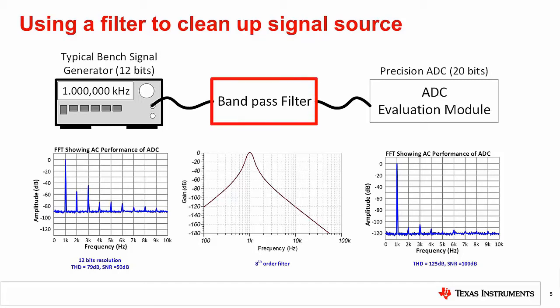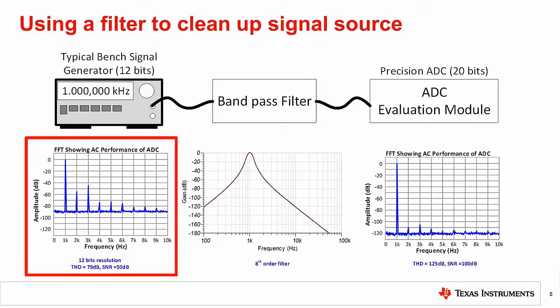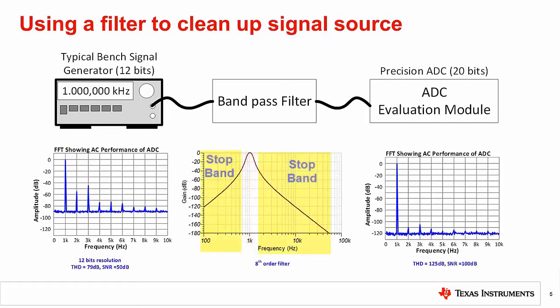One approach to getting high fidelity signals from a common signal generator is to use a band pass filter at the output of the signal generator. The example figure shows that the output of the signal generator has a relatively high noise floor and significant harmonics. Notice that the function generator is adjusted to generate a 1 kilohertz sine wave. This sine wave is applied to a band pass filter with a center frequency of 1 kilohertz. The pass band on the filter will pass the fundamental, and the stop bands will significantly attenuate the noise and harmonics.